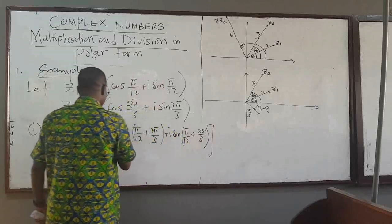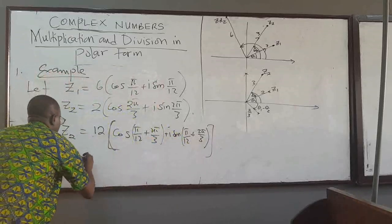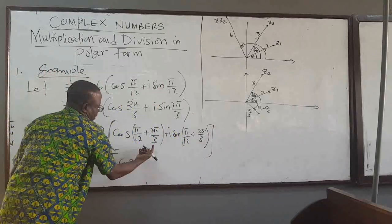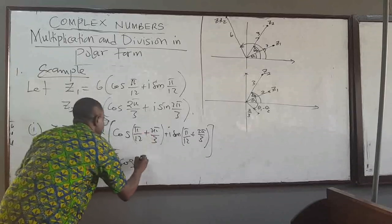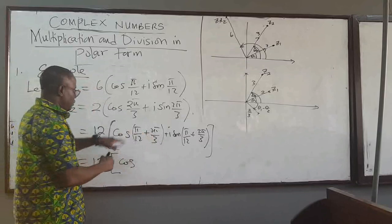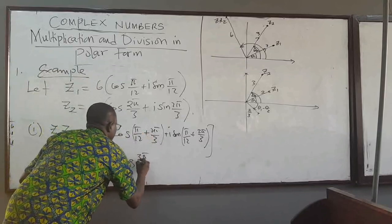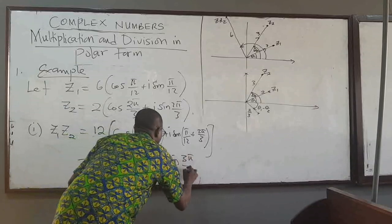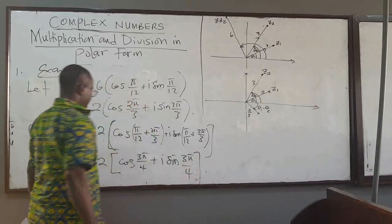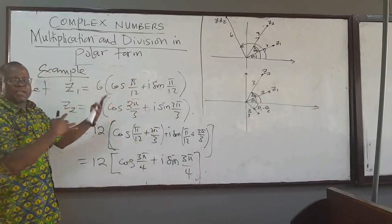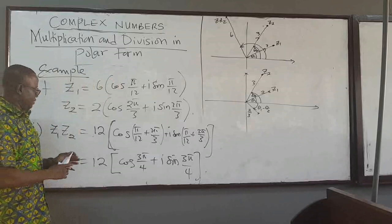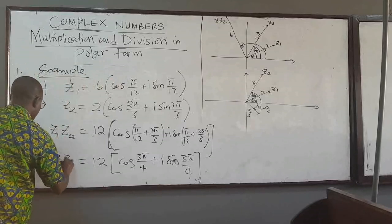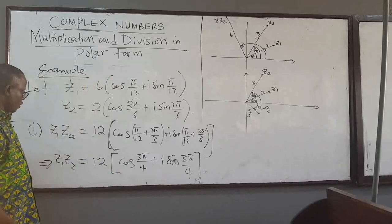And the cosine argument will be the sum of the two angles: pi over 12 plus 2 pi over 3, and similarly for the sine. That equals 12 times cosine of — simplifying: 8 pi plus pi over 12 gives 9 pi over 12, which simplifies to 3 pi over 4 — plus i sine of the same angle. So instead of expanding and using trig identities, you just apply the concept we learned. This implies the product of the two complex numbers is given by that result.